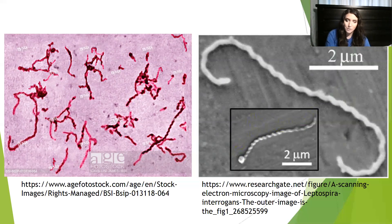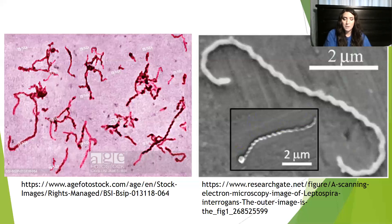Examples of host organisms, as we discussed, are rats most commonly, rodents, livestock, dogs, and even humans. While not inside of a host, Leptospirointerrogens is a chemo heterotroph, relying on energy from the molecules broken down in soil and water.